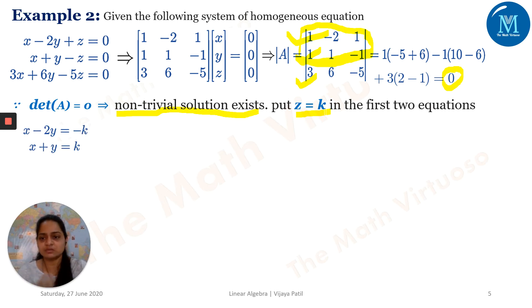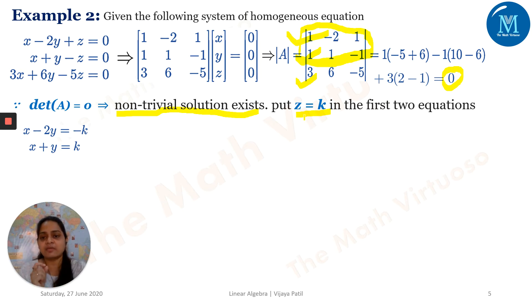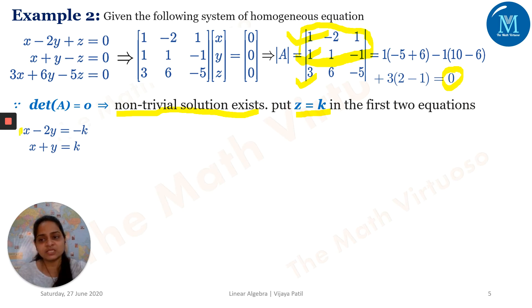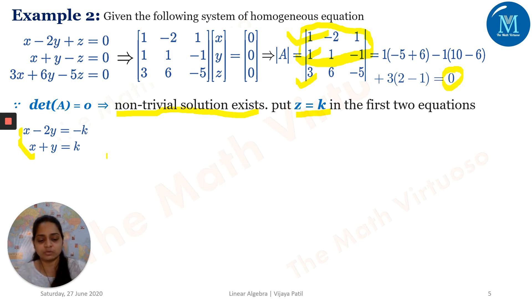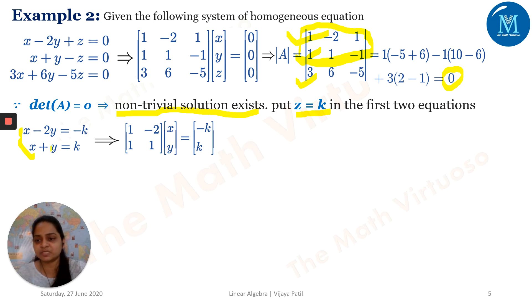So we set Z = K, where K belongs to ℝ minus {0} — K cannot be zero. Substituting Z = K, we get: X − 2Y = −K and X + Y = K. In this case, K and −K are playing the role of constants. We now treat this as a non-homogeneous system AX = B (as discussed in the last video), and find the determinant of the coefficient matrix [1, −2; 1, 1] equals 3, which is non-zero.